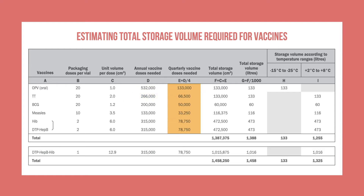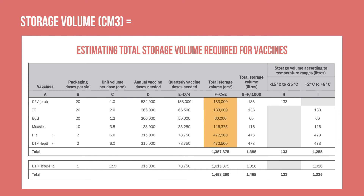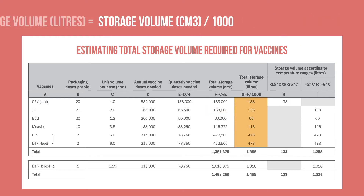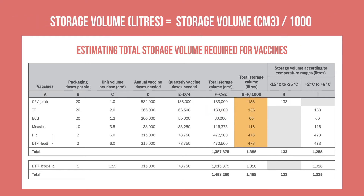Since you are calculating storage requirements for each quarter, divide the annual number by 4 to determine the expected quarterly doses. Here, 66,500 doses of TT are expected. Now calculate the total storage volume of each vaccine by multiplying the unit packed volume by the expected quarterly vaccine doses. The storage volume for TT each quarter would be 133,000 cubic centimeters. Divide by 1000 to convert from cubic centimeters to liters, so TT vaccine would require 133 liters.